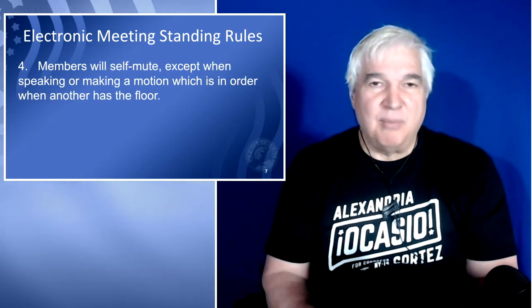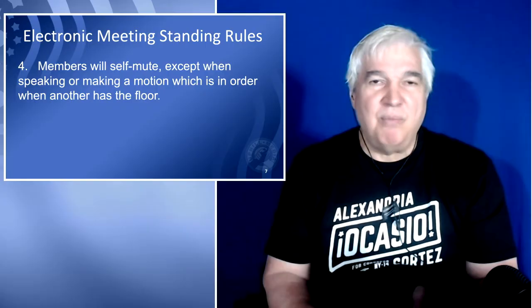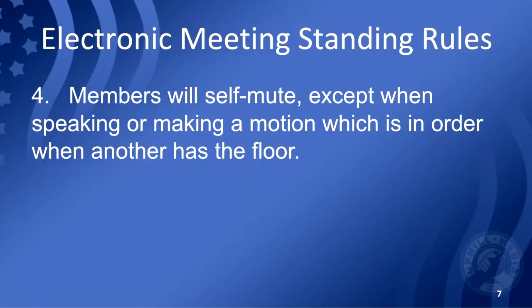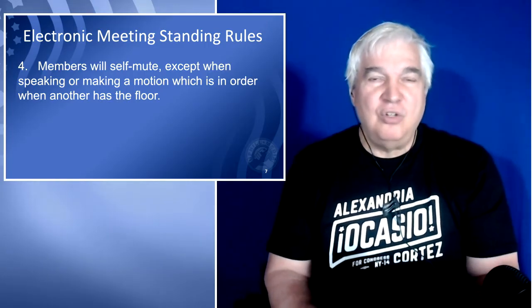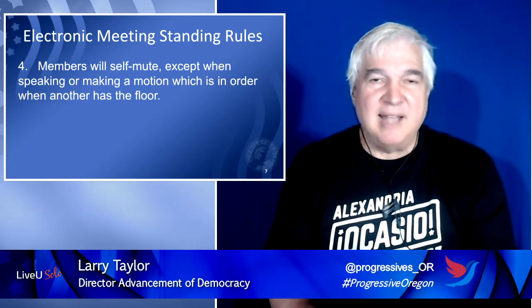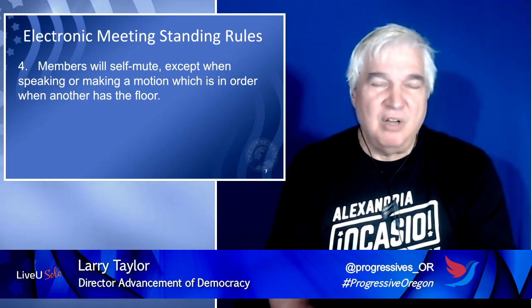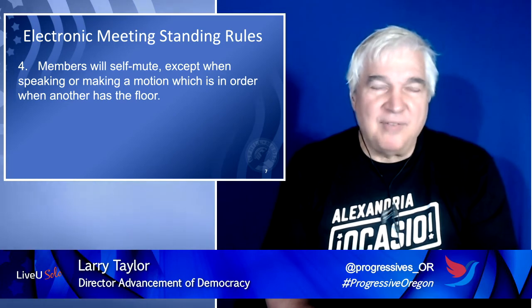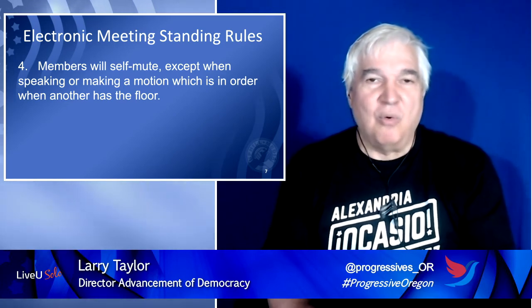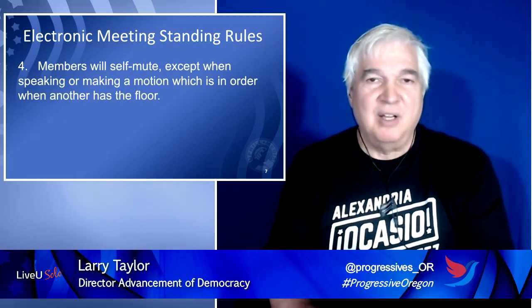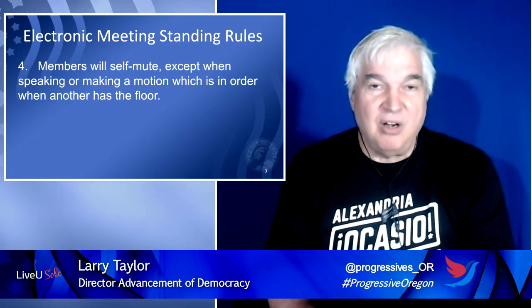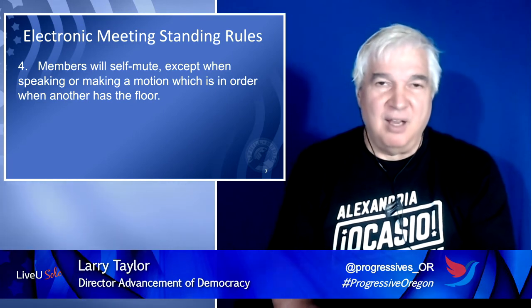The next rule is about background noise. Instead of the controller of the meeting controlling the muting, we're asking members to self-mute except when speaking or making a motion which is in order when another has the floor. There are a number of motions that can interrupt a speaker, and you should be allowed to do that in an electronic meeting as if you were in a meeting in a room with other members. But we ask that people self-mute so other members don't have to listen to background noise interrupting the discussion.